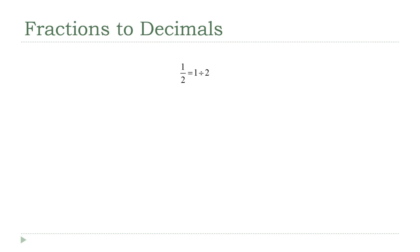Converting from a fraction to a decimal really is as simple as interpreting the fraction as a division problem. 1 over 2 — one half — is the same as 1 divided by 2. At that point you can go to your calculator, or sometimes, when you've been doing this for a while, there are fractions you just know: 1 half is 0.5, and there's your decimal version.